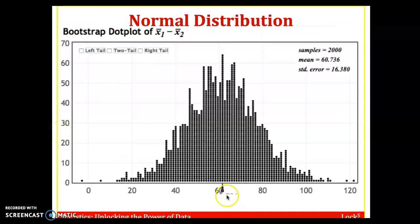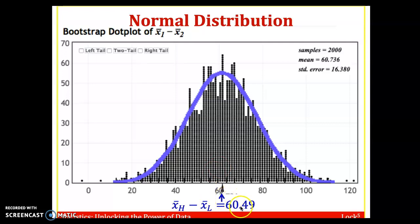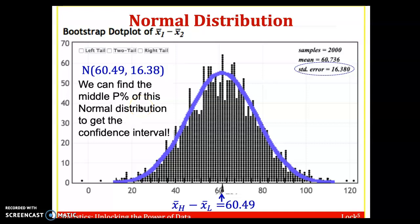So again, going back, the middle should be about 60. The difference was 60.49 and standard error is 16.38. So if we want to use the normal distribution approach, we'd enter 60.49 and 16.38 into StatKey to find the 95% confidence interval.